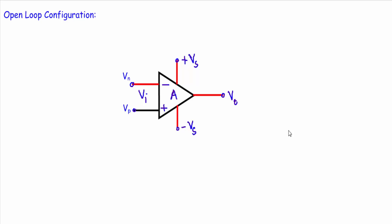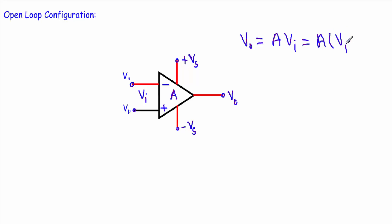An operational amplifier will operate in the nonlinear region when it is either in positive feedback or in open-loop configuration. Let me recall the open-loop configuration — here the operational amplifier has no direct connection between the output terminal and any of the input terminals. This op-amp has an open-loop gain of A, so the output voltage V_O equals A times V_I, where V_I is V_P minus V_N.